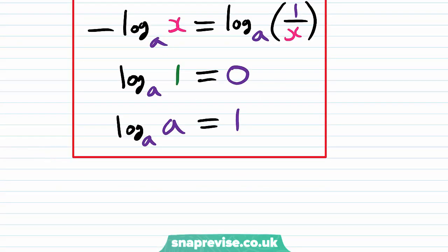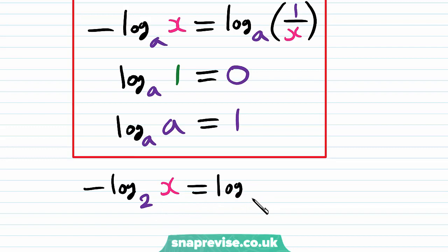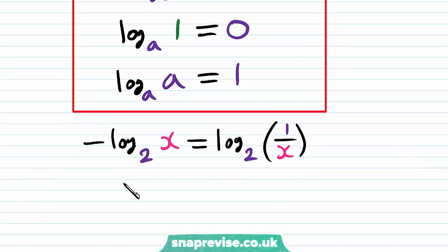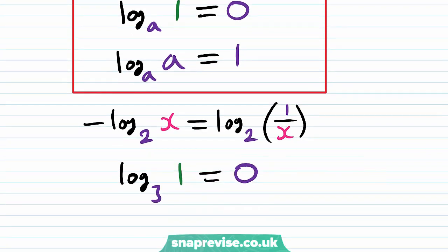So in particular, the minus log base 2 of x is the same as the log base 2 of 1 over x. The log base 3 of the number 1 is equal to 0. And lastly, the natural logarithm of e, i.e. the same as the base, is equal to 1.